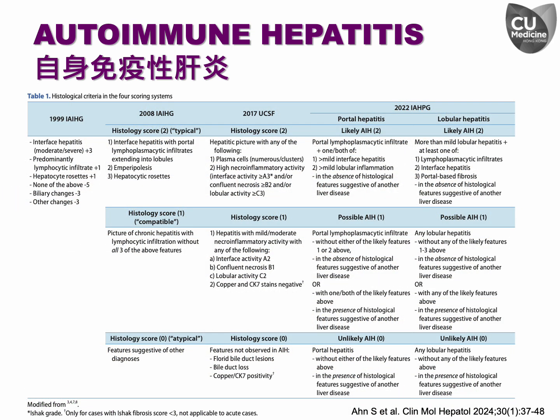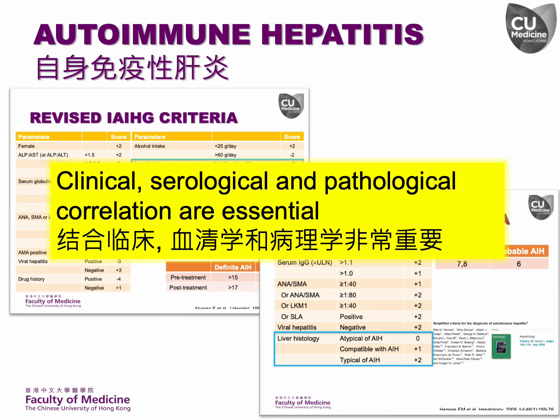Hence, recent histological criteria emphasize portal lymphoplasmacytic infiltrate, more than mild interface hepatitis, and more than mild lobular inflammation, while hepatocyte rosette and emperipolesis are no longer considered. However, we should remember that histology is only one of the parameters in diagnosing autoimmune hepatitis. Clinical, serological, and pathological correlation are essential for an accurate diagnosis.